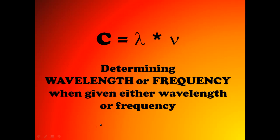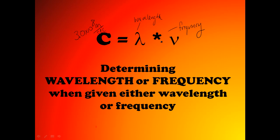What we're going to work on now are the speed of light calculations. You're always given speed of light, and you should know this value — it's 3.0 times 10 to the 8th meters per second. This is wavelength lambda, and then you've got nu, which is the symbol for frequency. The equation you should know is: speed of light equals wavelength times frequency. Speed of light is always going to be 3.0 times 10 to the 8th meters per second.